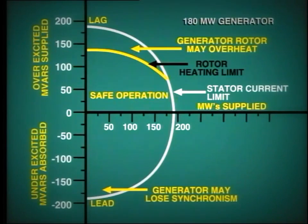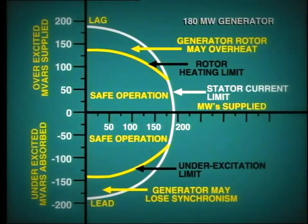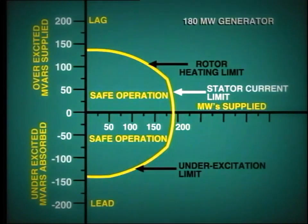In order to prevent this, a minimum excitation limit is established, which is given by this additional curve here. This combination of limits provides the generator capability curve that you should be familiar with.